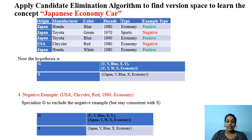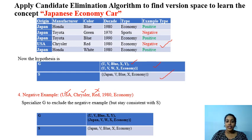The current hypothesis is these two, and we got a negative instance. Let's check with G and S. Checking from G: U and USA are accepted, V and Chrysler are accepted, but Blue and Red are getting rejected — so this hypothesis is able to reject the negative example and is consistent. The second hypothesis in G accepts U, Chrysler, Red, 1980, and Economy — so we need to make some changes here.